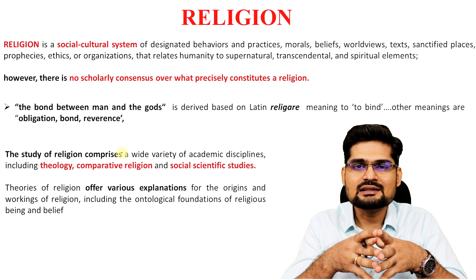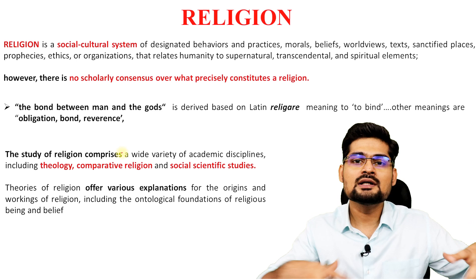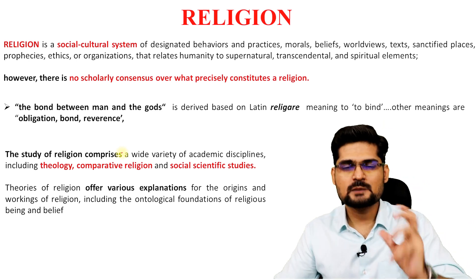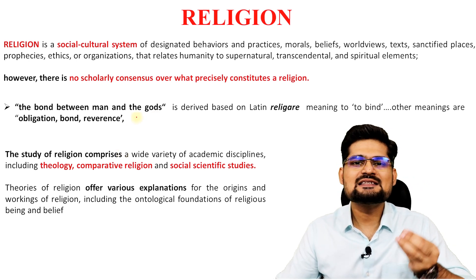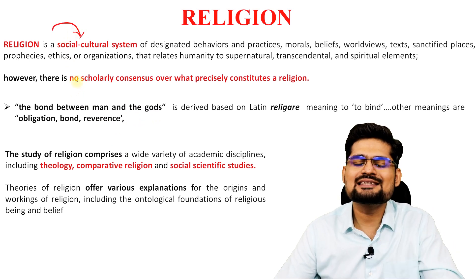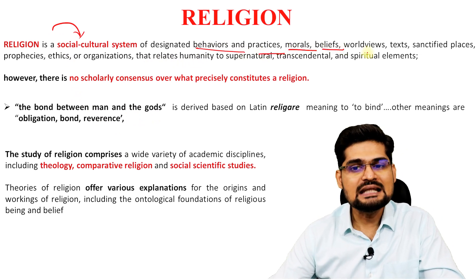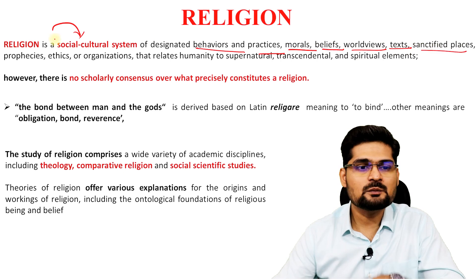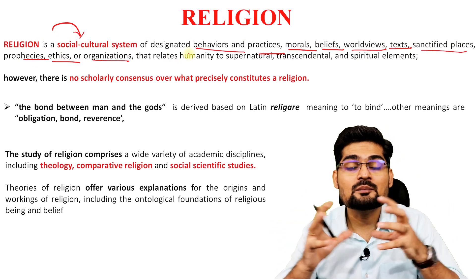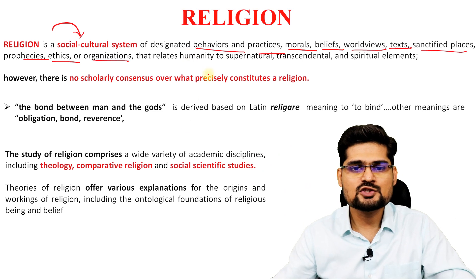The next thing we need to learn is religion — how it emerged and how it also has a spatial and geographical pattern across the globe and India. Religion is basically a socio-cultural system of designated behaviors, practices, morals, beliefs, worldviews, texts, sanctified places, prophecies, ethics, and organizations. All these things comprise a religion. It relates to several transcendental, spiritual, and sometimes supernatural elements.